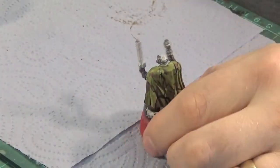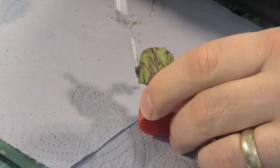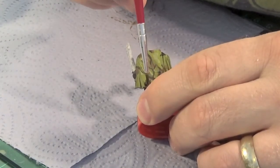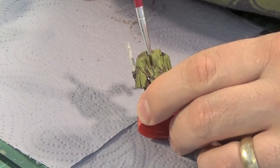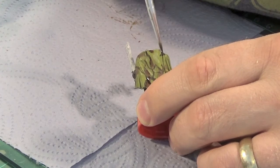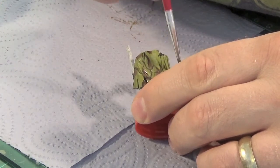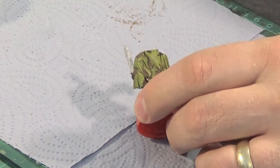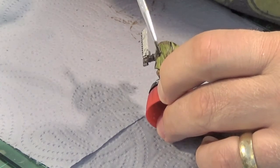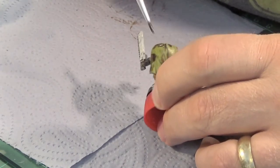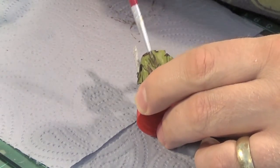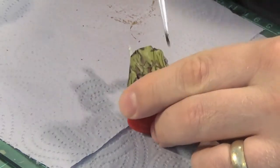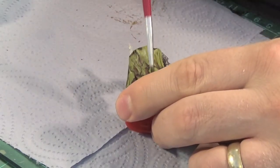Once that's dry, come in with some Agrax Earthshade. Now this is a little bit more precise. I'm just going over the brown areas and the bottom of the cloak. So just the brown bits, the goreful brown, a little bit along the bottom edge of the cloak to make it look a bit more dirtied up from the battlefield, I guess.